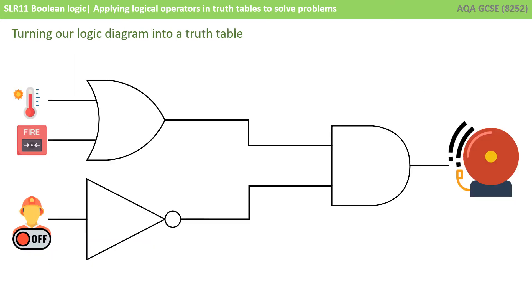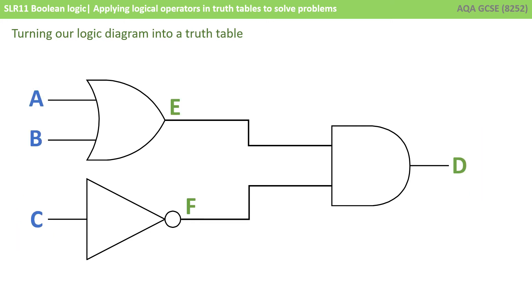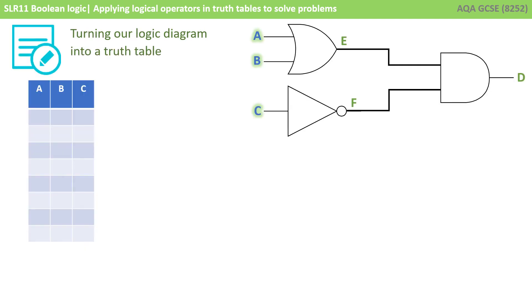The next thing is to turn our logic diagram into a truth table. The first thing to do is replace the diagrams with letters, as these make more sense in our truth table. We've got three initial inputs — A, B, and C — and one output at the very end, D. But we've also got two intermediate outputs: the output from the OR gate and the output from the NOT gate, which I've labelled E and F.